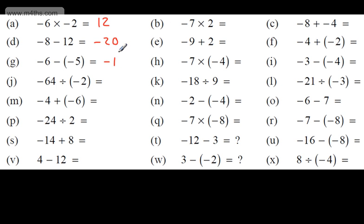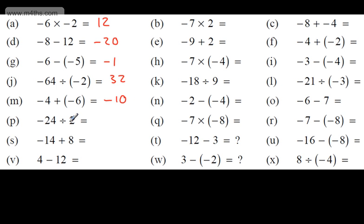Two negatives dividing: if the signs are the same, it's positive — 64 divided by 2 is 32. Negative 4 plus another negative number decreases the value, giving negative 10. 24 divided by 2 is 12; one negative and one positive means the signs are different, so the answer is negative 12.